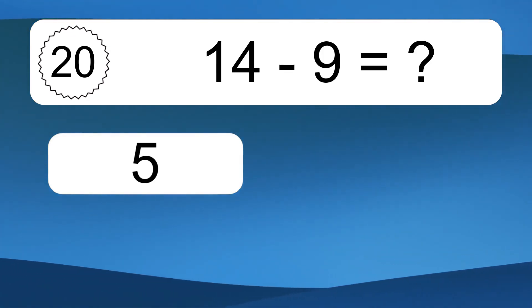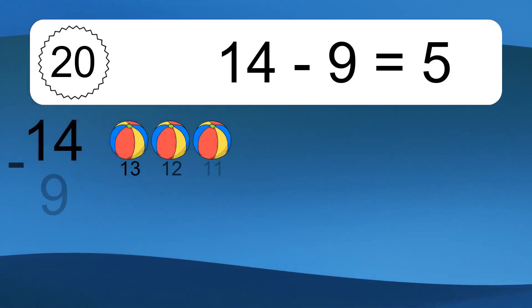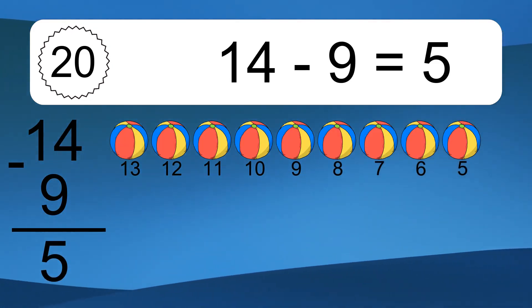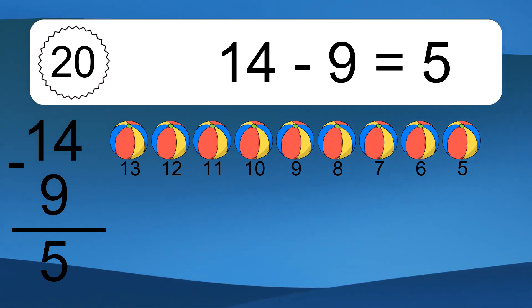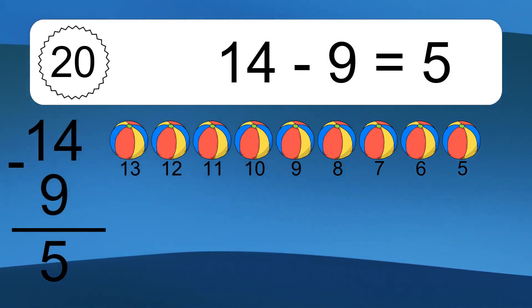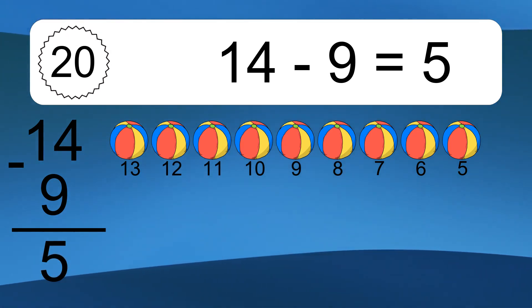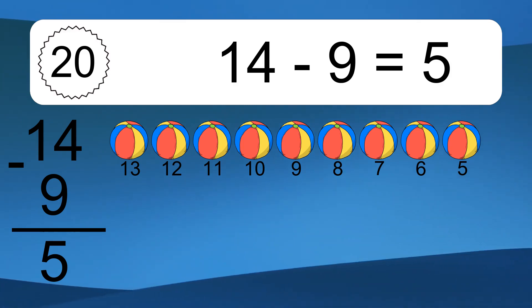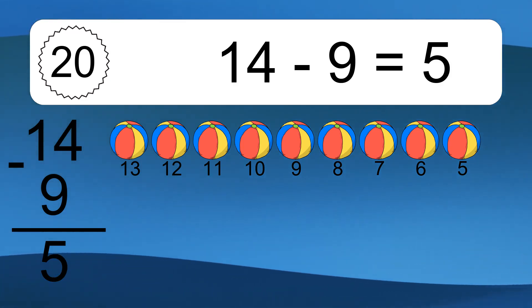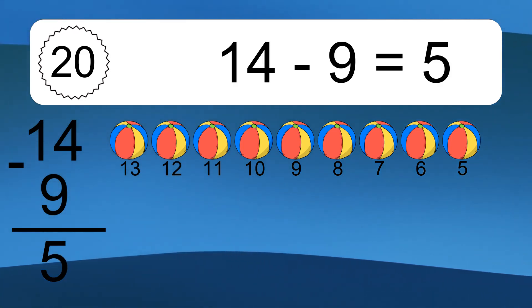14 minus 9 equals what? 14 minus 9 equals 5. Let's count it. 13, 12, 11, 10, 9, 8, 7, 6, 5.